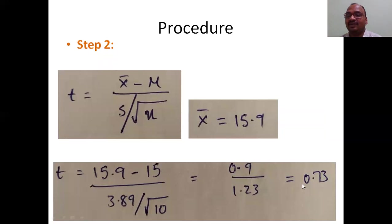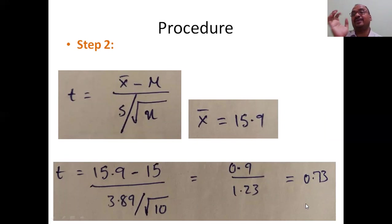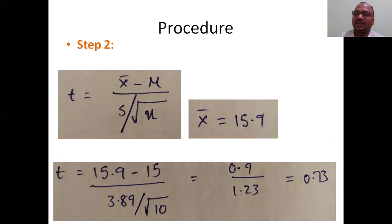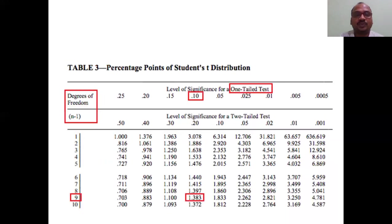The obtained t-value I calculated is 0.73. The sample size n equals 10 animals, so n = 10, and the obtained t-value is 0.73.